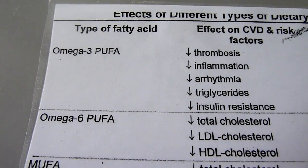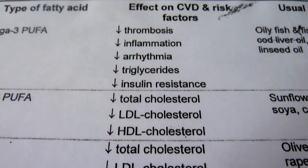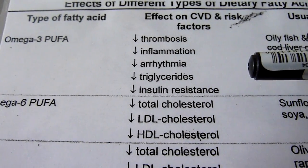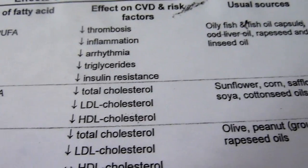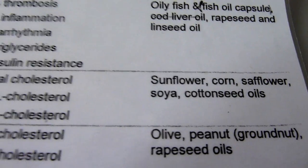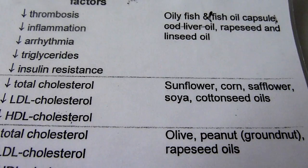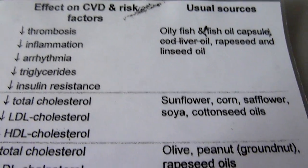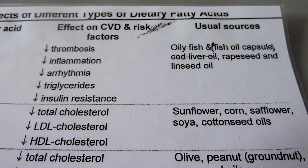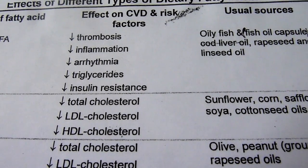Omega-6 is another type of polyunsaturated fatty acid. It does reduce total cholesterol and it reduces LDL, but the problem is that it also reduces HDL, which is the healthy cholesterol that we want. We tend to find these sorts of oils in sunflower oil, corn, safflower, soya and cottonseed oils. So it's one of the reasons I would probably choose rapeseed oil above sunflower oil, just based on the effect it has on HDL cholesterol.